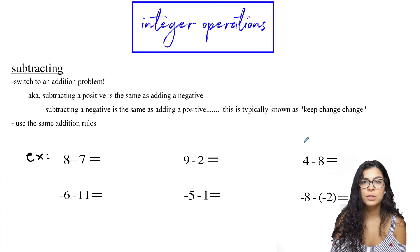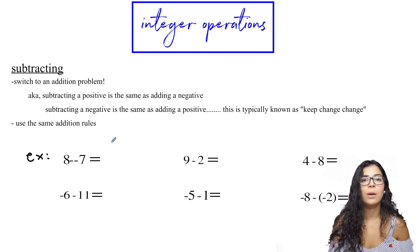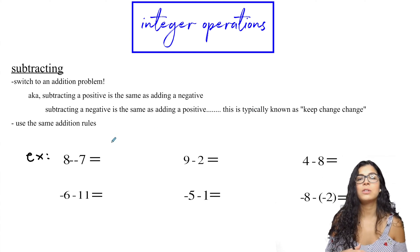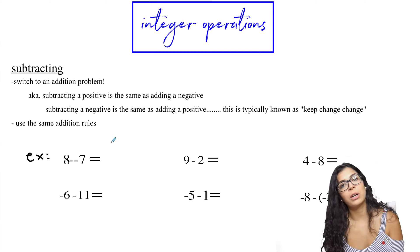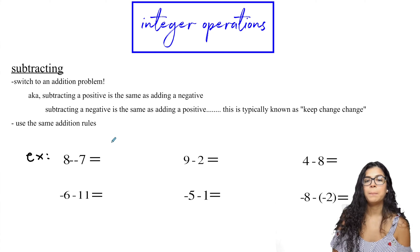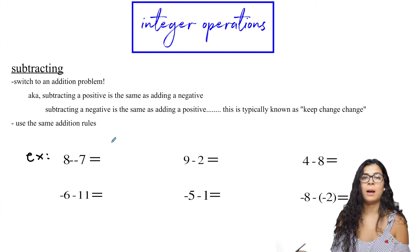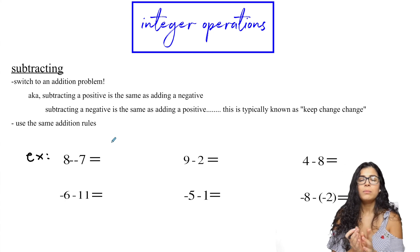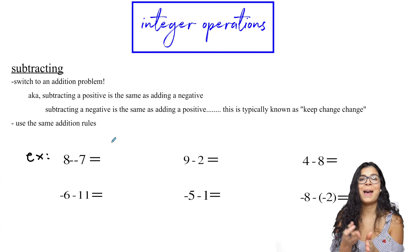Next up, let's talk about subtracting. So with subtracting, what we're going to do is we're actually going to change this to an addition problem. We're going to switch it from a subtraction problem to an addition problem. What I like to do is I just like to think as opposite opposite. So if I'm looking at subtracting a positive, that's the same as adding a negative.